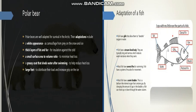Fish also swim with the help of fins and tail. Scales are present on the body of fish, and most fish have a swim bladder, which is a balloon-like internal organ that contains gas. By changing the amount of gas in the bladder, a fish can move up or down through the water column.